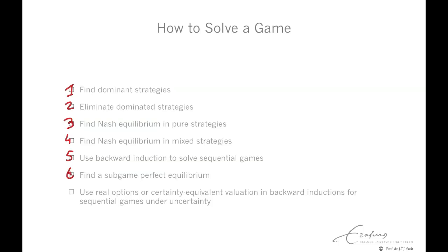Sixth, find a subgame perfect equilibrium. A subgame is a game within the total game. A subgame perfect equilibrium is a set of strategies for each player, where any of these strategies is also a Nash equilibrium for every subgame of the game. So we solve all the subgames and find the Nash equilibrium there, and then solve the game by finding a subgame perfect equilibrium of the total supergame.